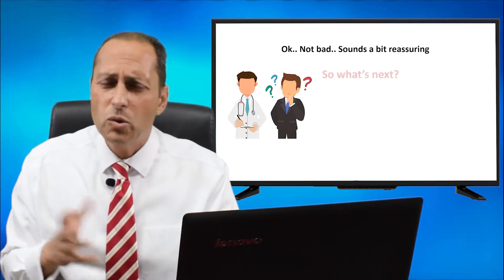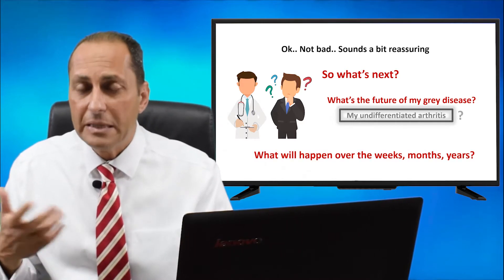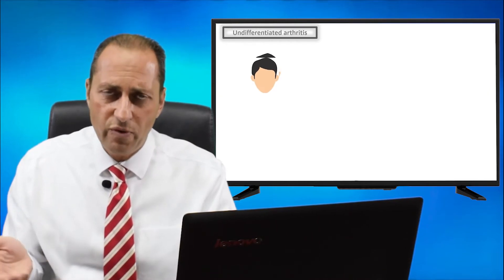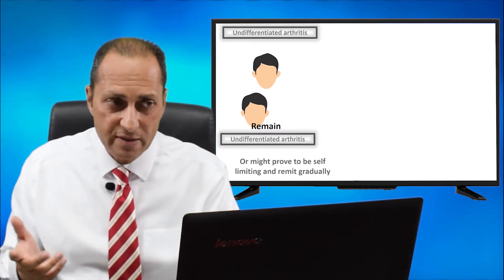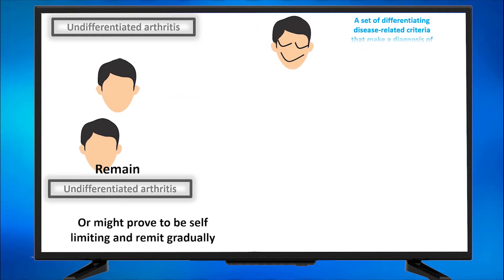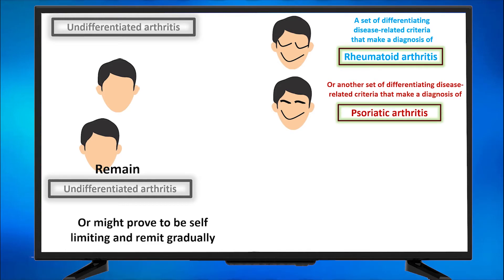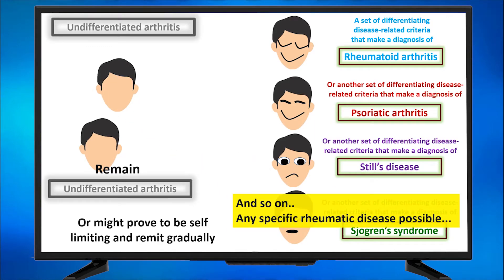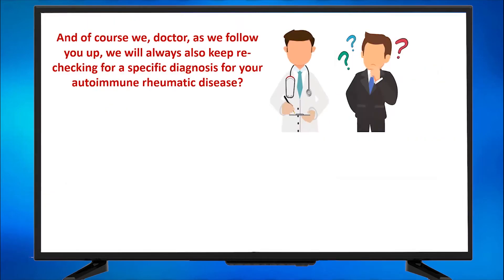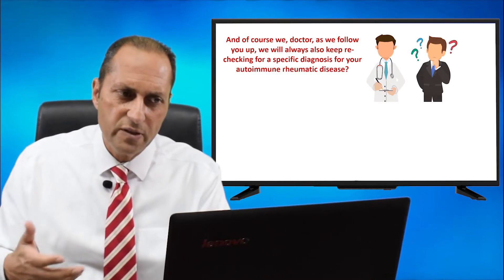Sounds a bit reassuring. So what's next — what's the future of my gray disease, my undifferentiated arthritis? What will happen over the weeks, months, years? Well, undifferentiated arthritis, as we follow those patients up, might remain undifferentiated arthritis, or the arthritis might prove to be self-limiting and remit gradually. Another option: the disease over time will show differentiating criteria that lead to a diagnosis of rheumatoid arthritis, psoriatic arthritis, Still's disease, Sjögren's syndrome, and so on — any specific rheumatic disease is possible. And we doctors, as we follow you up, will always keep rechecking for a specific diagnosis for your autoimmune disease.